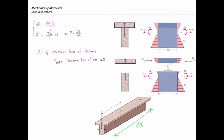If v_bolt is the resistance force of each bolt and n is the number of bolts, then ΔF must be smaller than n·v_bolt. Now, how many bolts do we have? It depends on the spacing. For example, with a 12-inch beam and 3-inch spacing, we get 12/3 = 4 bolts. Parametrically, n = ΔX/s. That is how we determine the number of fasteners over a given length.